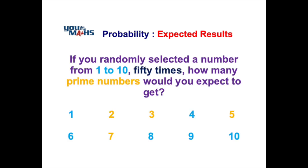Let's have a look at that same question, but with the numbers one to ten displayed. Out of the numbers one to ten we can see here in yellow that there are four prime numbers: two, three, five, and seven. So the chance of getting a prime number on one selection is four out of ten.